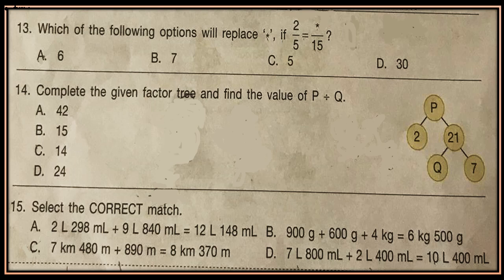Question 14: Complete the given factor tree and find the value of P divided by Q. See the factor tree on the right side, calculate the values of P and Q first, and then find the value of P divided by Q. See the solution to this question at the end of the video.